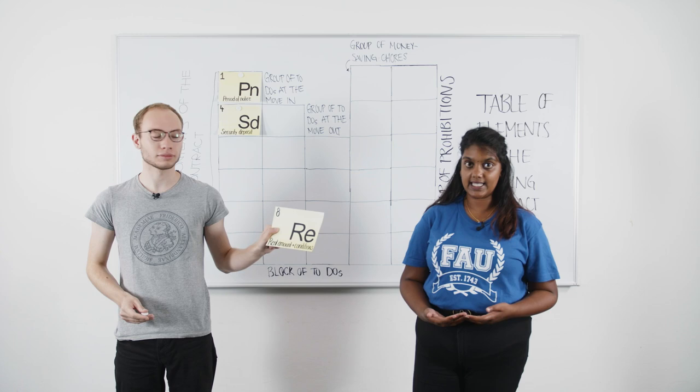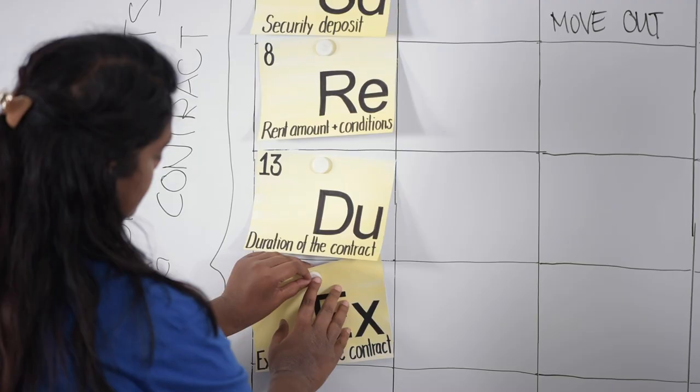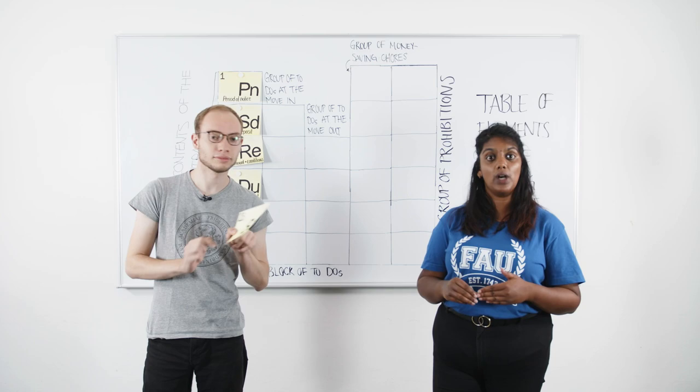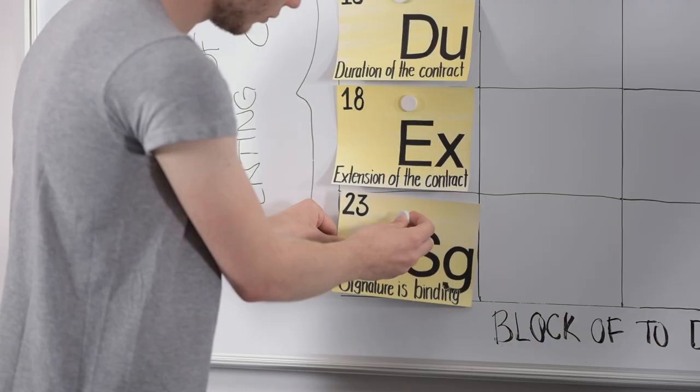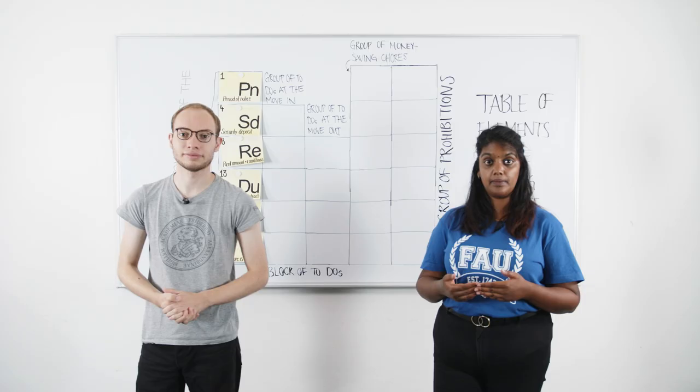The contract also states the amount of rent and how and when you'll have to pay it. It states the duration of your tenancy and whether your contract is unlimited or if you have to extend it every semester. With your signature, you agree to all regulations in the contract and the house rules, so if you break them, you'll be held liable.